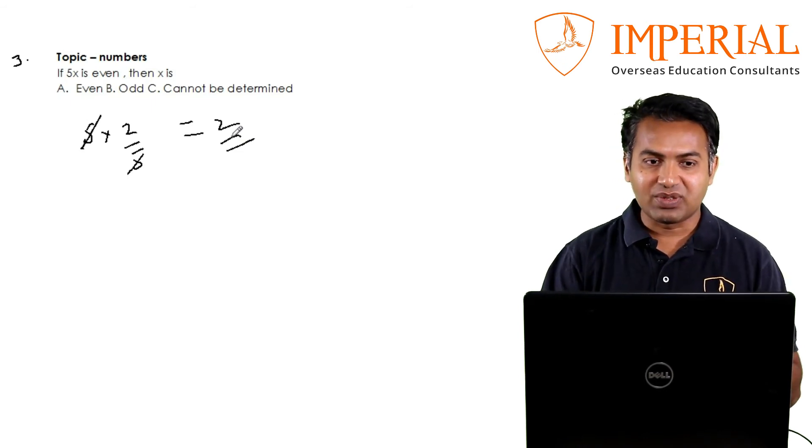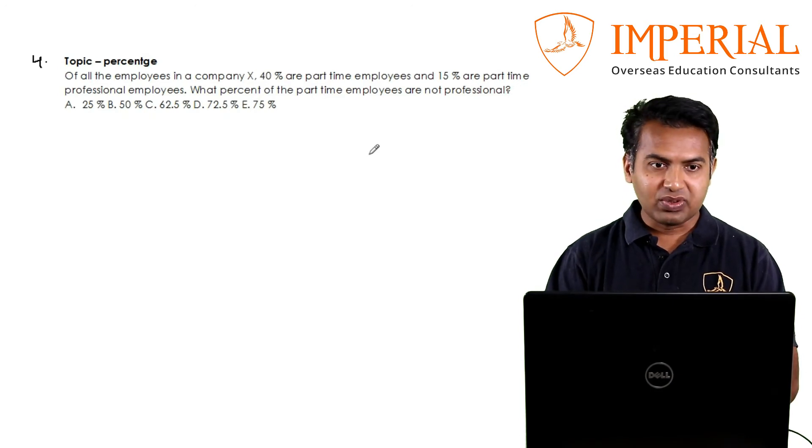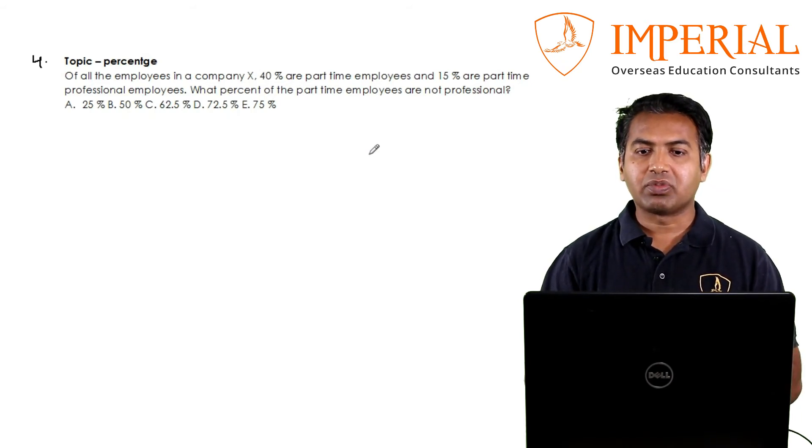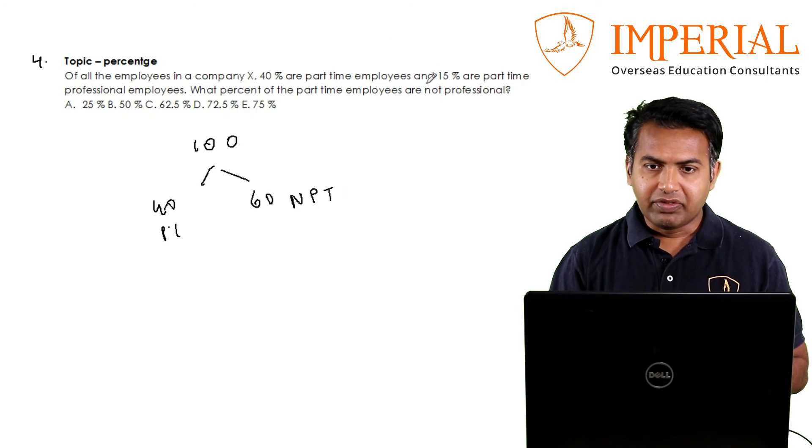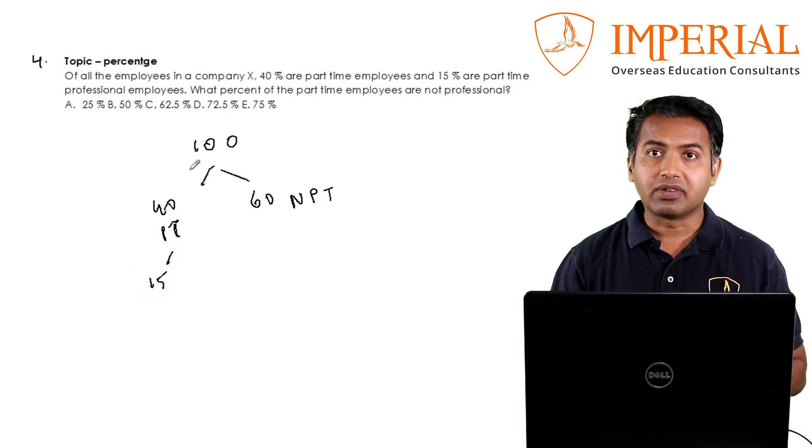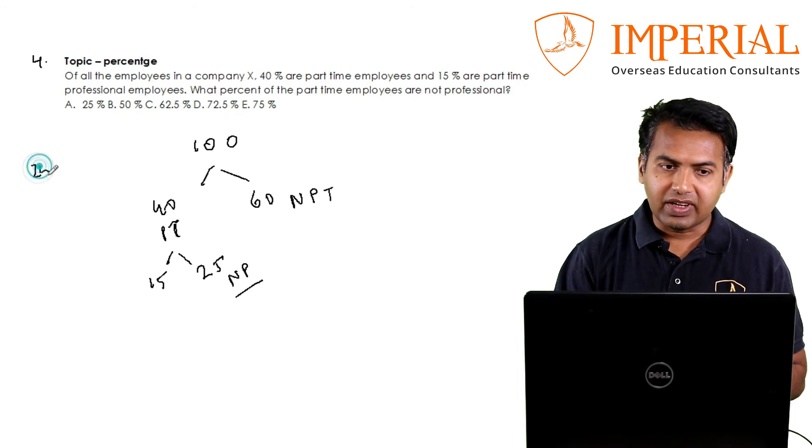Fourth one, a question from percentage. Again I'll show you the trick to do this fast. Of all the members in the company, 40 percent are part-time and 15 percent are part-time professional. What percent of the part-time employees are not professional? Very simple and quick. Start with 100. 40 percent are part-time, so 40 are part-time, 60 will be full-time. 15 percent are part-time professional, so out of 100, part-time professionals are 15. Question: what percent of the part-time employees are not professional? So out of these 40, 15 are professional, that means 25 are not professional.